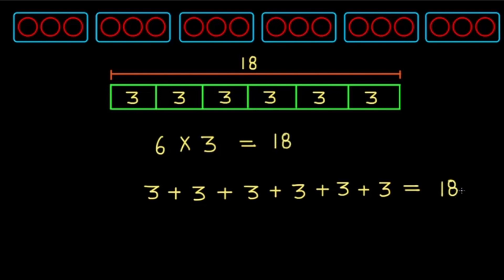Since the groups are equal, both equations give us the same answer of 18. You can see how the equal groups in a multiplication problem are also repeated addition. Use what you know about multiplication to help you solve your problem.